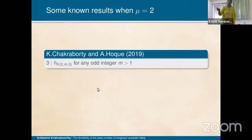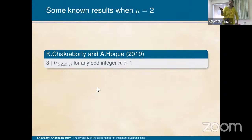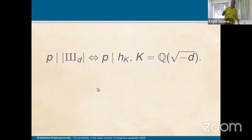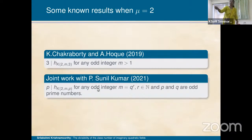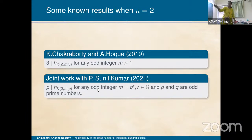The paper and result by Professor Kalyan and Azizul, a 2019 paper, proved that 3 divides the class number of the quadratic field K(2, m, 3). Professor Kalyan visited and gave a detailed 45-minute proof of this paper — it was a very clear talk. After that, my student and I became interested in generalizing that result from 3 to any prime p, using the same proof strategy.